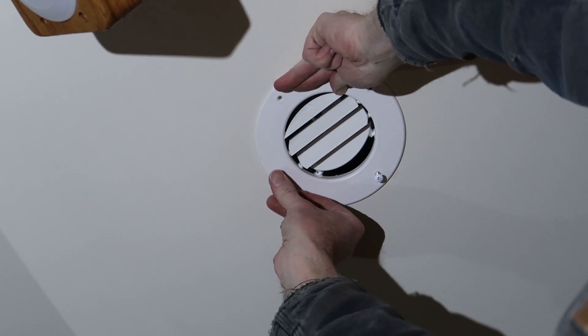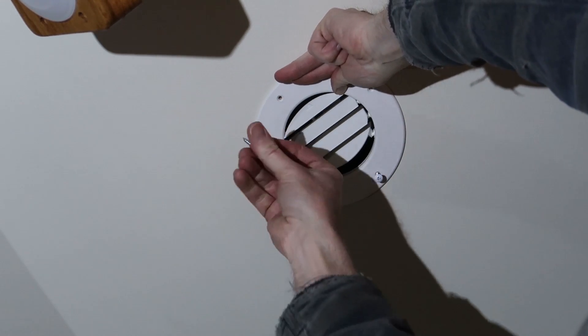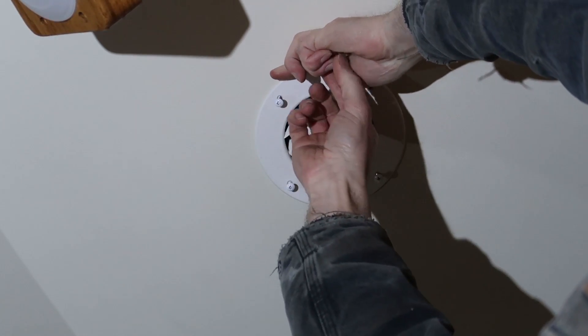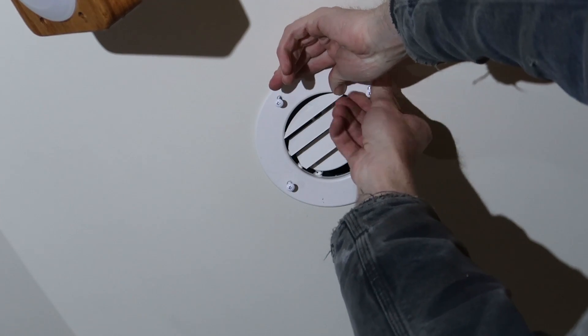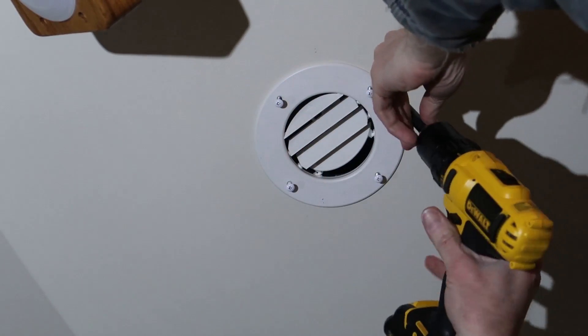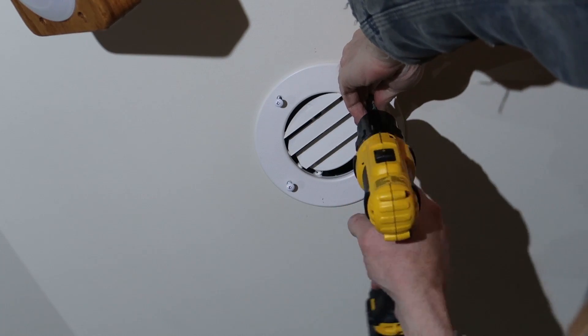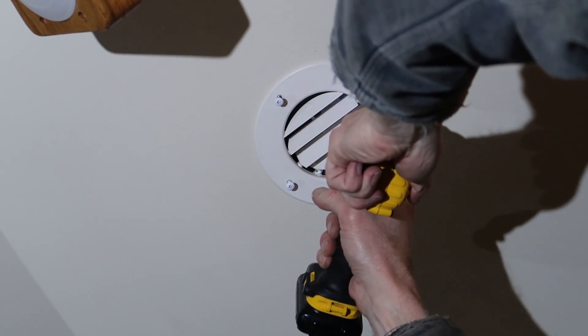Start threading those in by hand. And you can either use a handheld screwdriver or a power drill. It's kind of tedious to work overhead with a hand screwdriver. So I've got my little 12 volt DeWalt power drill with the clutch set to the lowest setting.